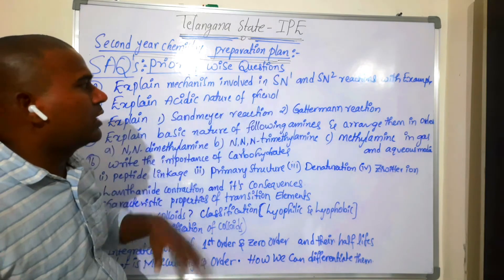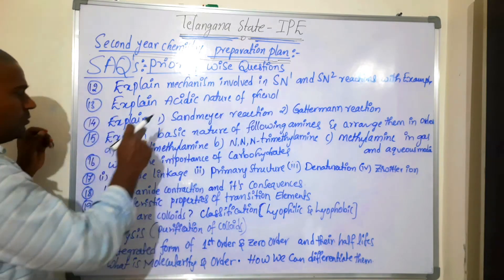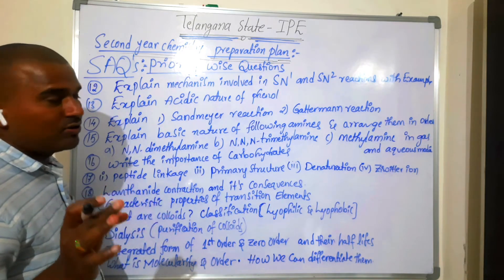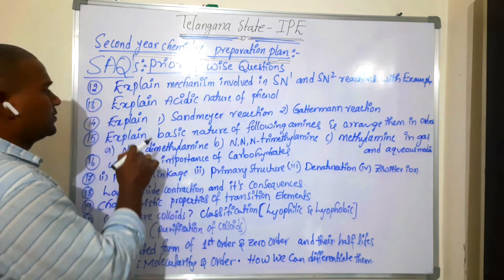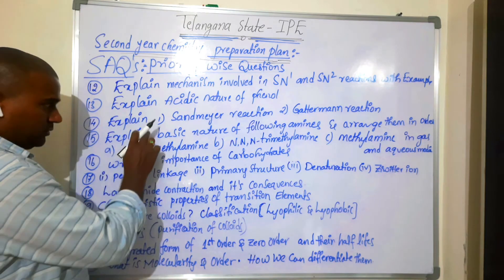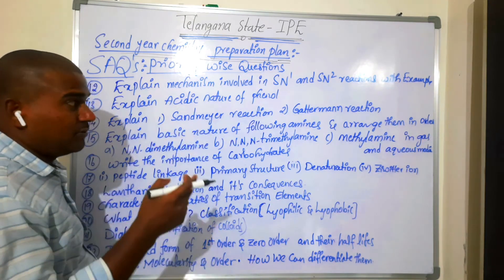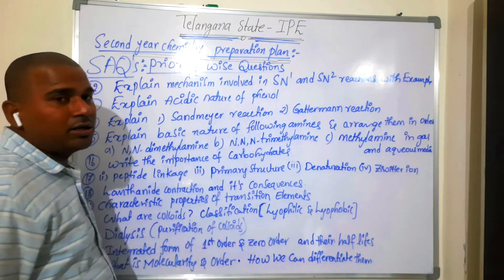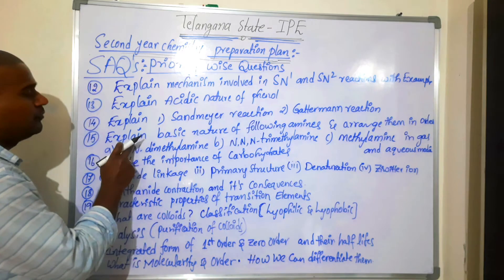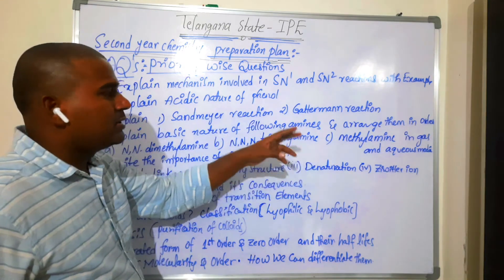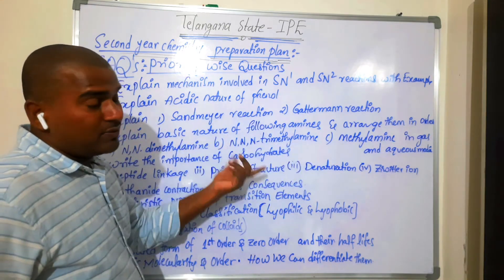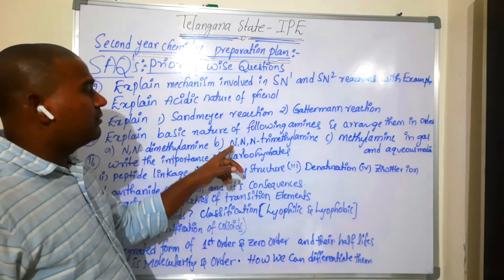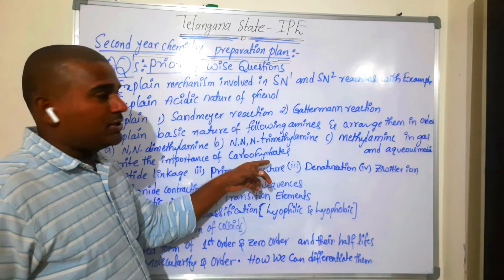Most important: explain acidic nature of phenols — the expected question from phenols and alcohols. Explain Sandmeyer reaction and Gattermann reaction — very important named reactions. Explain basic nature of amines in aqueous medium as well as in gas phase: NN dimethylamine (secondary amine), NN trimethylamine (tertiary amine), and methylamine (primary amine).